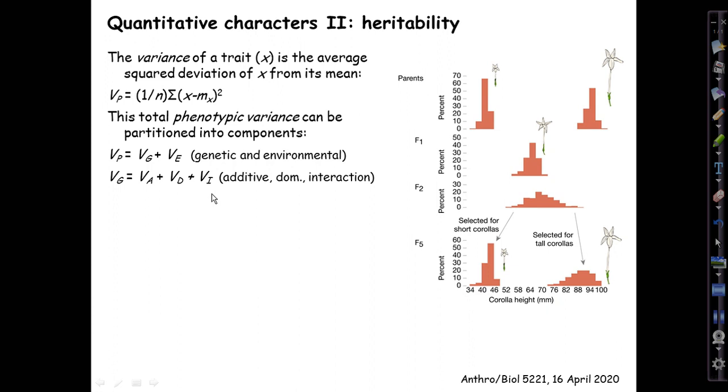It's a fact that V_I is harder to estimate, and also, fortunately, usually not very large. So the important split within the genetic variance is that between the additive and the dominance component, which will be most of the non-additive part.